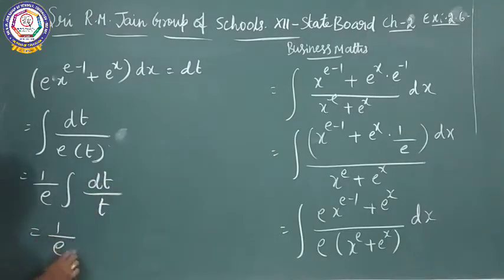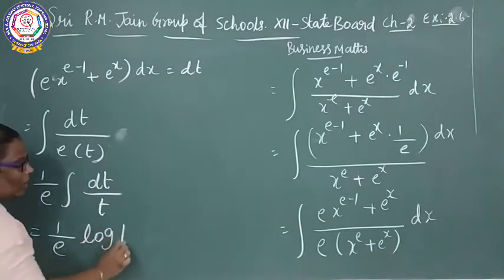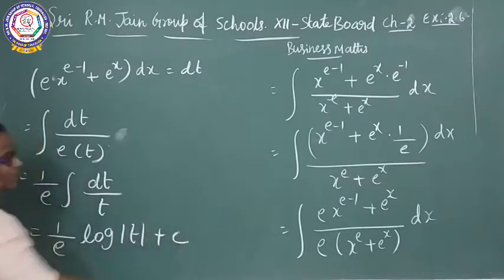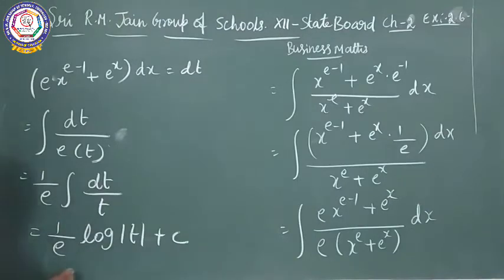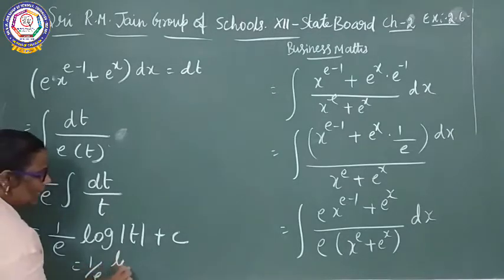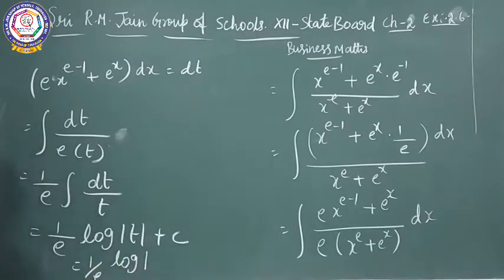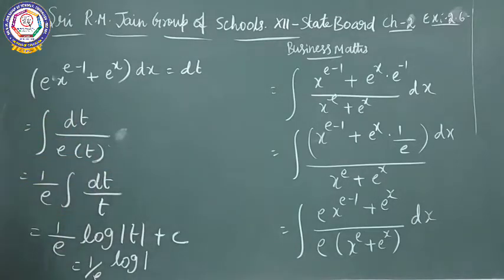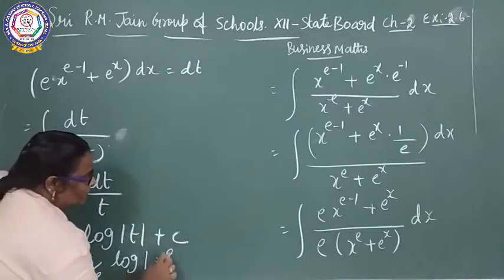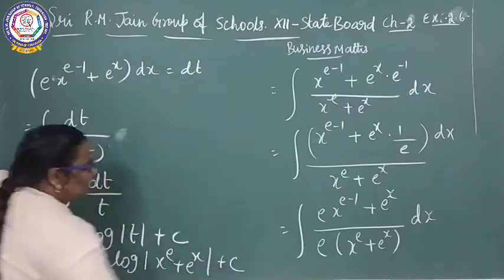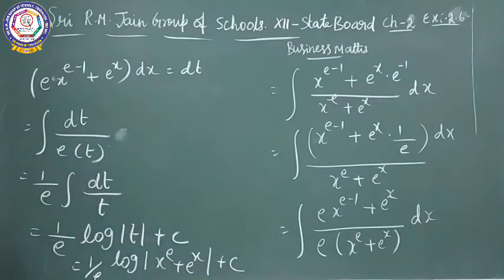It gives 1/e · log|t| + C. Because integral of dt/t is log|t|. Replacing t: the answer is 1/e · log|x^e + e^x| + C.